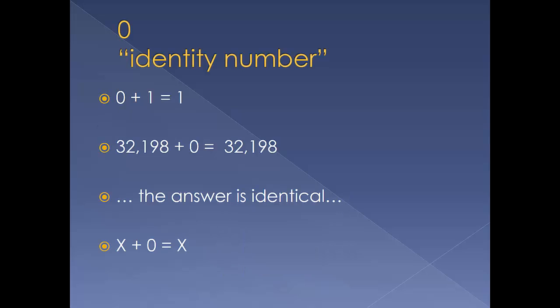Zero is called the identity number for addition and subtraction. Zero plus one is one. Thirty-two thousand one hundred ninety-eight plus zero equals 32,198.